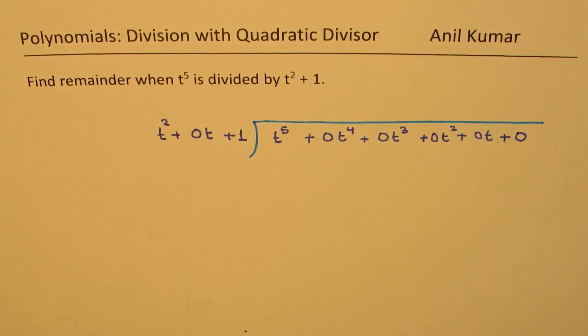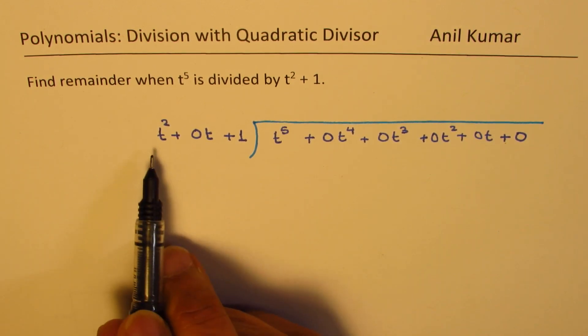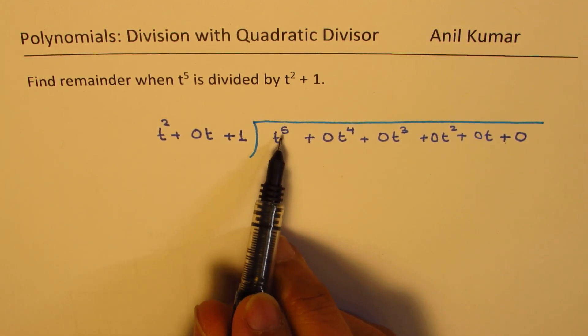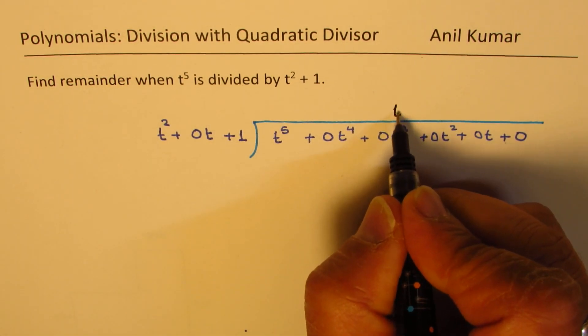Now, once you write like this, then I think it becomes much simpler. You can actually now pause the video, divide and then get your solution. So we have to take care of t to the power of 5, so we got to multiply by t cube.